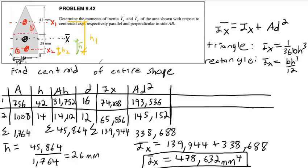I could also find I_y — that would be a very similar calculation, but the d term would actually be zero for each piece because the centroid is right down the center. For I_y, the d term is zero for each piece due to symmetry. There are also standardized beam tables you can look at that have these values pre-calculated, where you can straightforwardly find your I_x and I_y values.